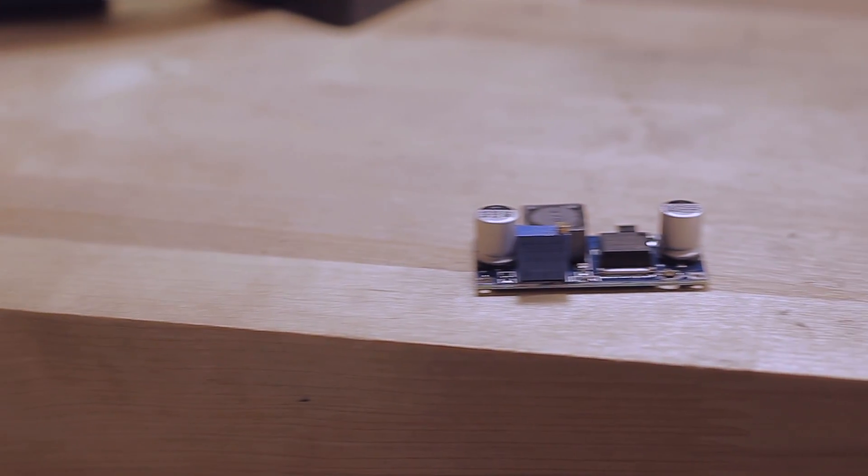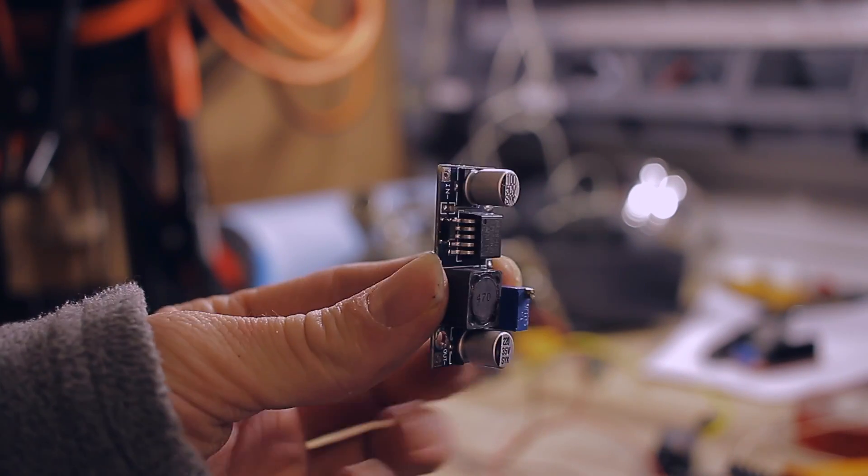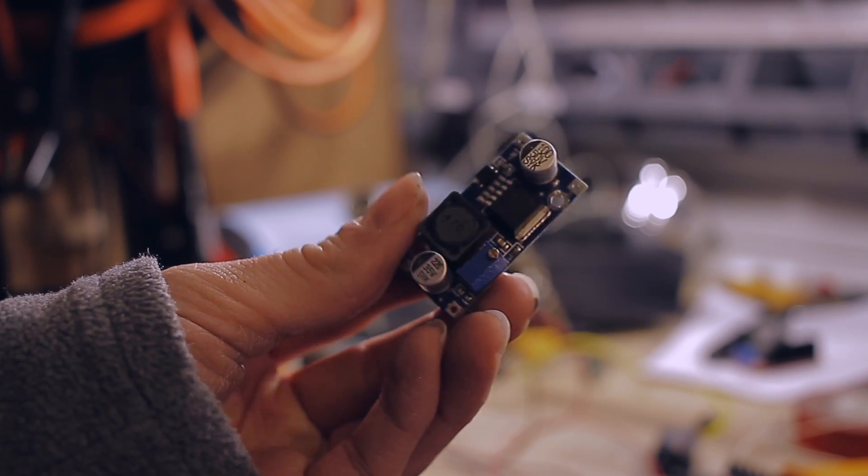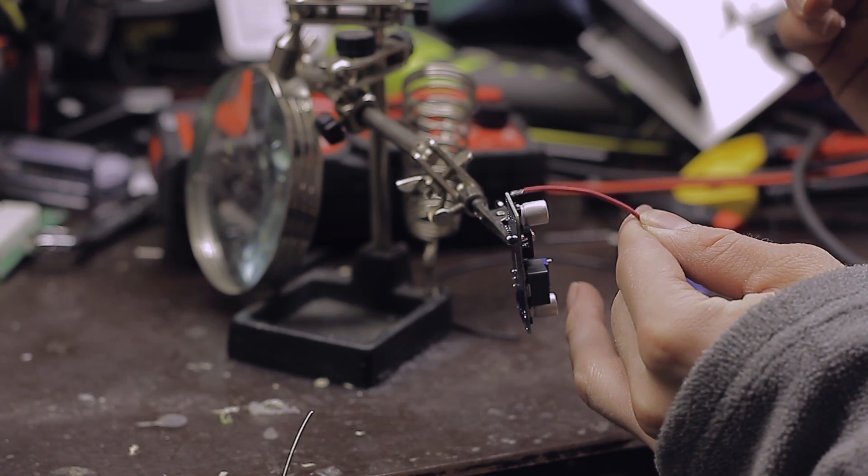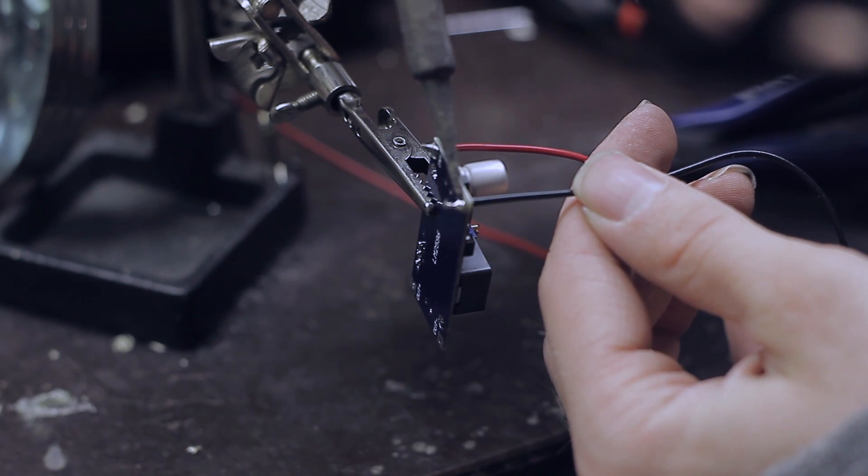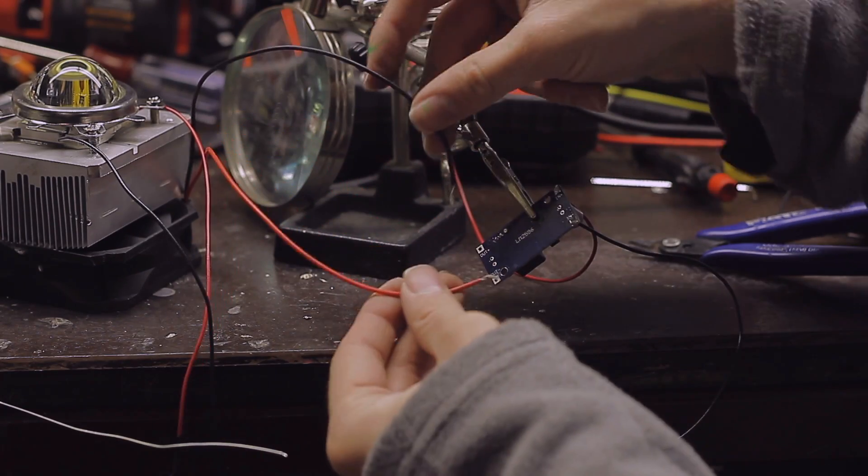With the PVC pipe all prepped, let's start working on some wiring. We're first going to wire up the fan. I'm going to use a step-down converter to regulate the voltage of our fan. So we're going to take a red and a black wire, and connect it to the positive and negative inputs on the step-down converter. We can then connect the positive and negative wires from the fan to the step-down converter.